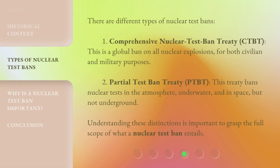There are different types of nuclear test bans. First, the Comprehensive Nuclear Test Ban Treaty, or CTBT — this is a global ban on all nuclear explosions, for both civilian and military purposes. Second, the Partial Test Ban Treaty, or PTBT — this treaty bans nuclear tests in the atmosphere, underwater, and in space, but not underground. Understanding these distinctions is important to grasp the full scope of what a nuclear test ban entails.